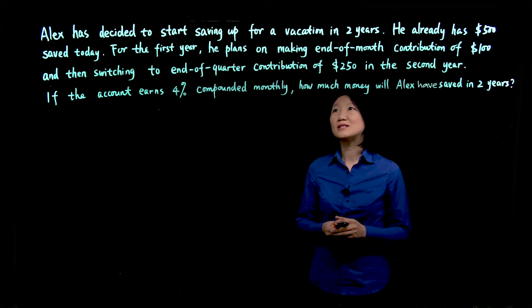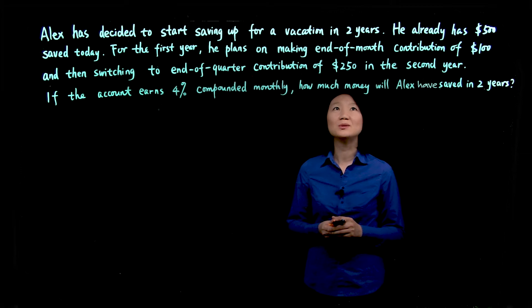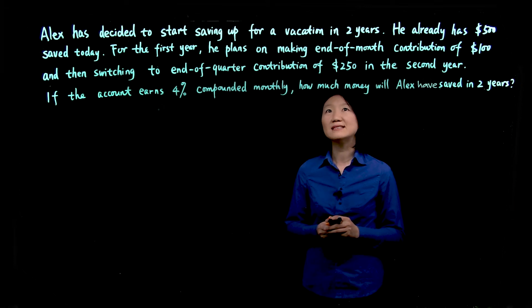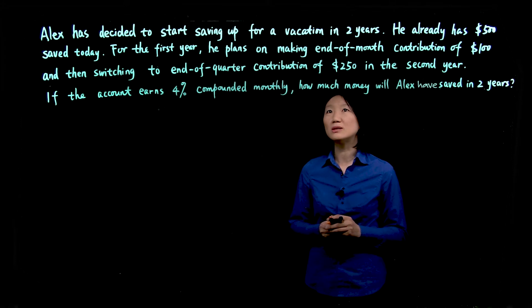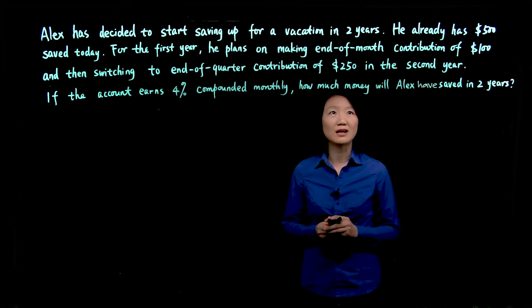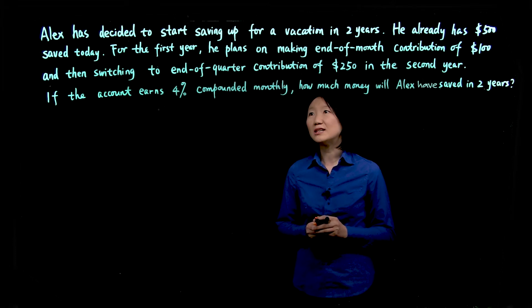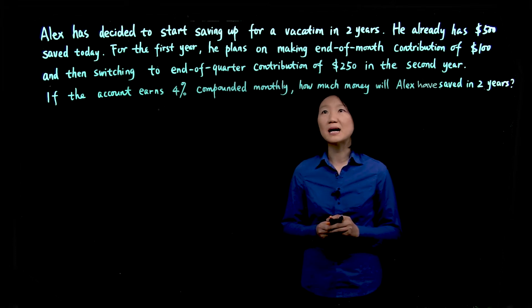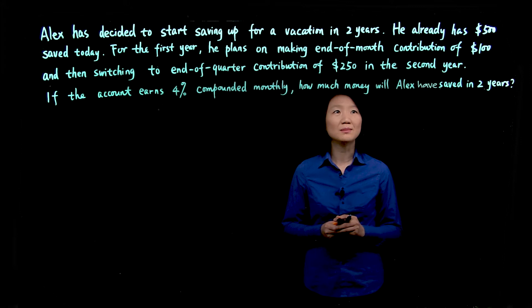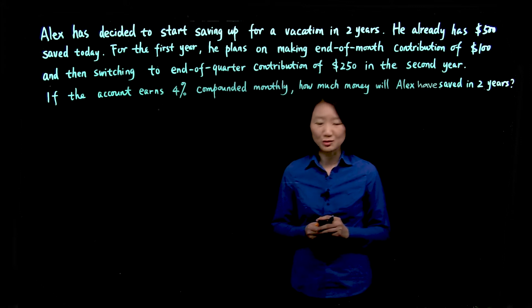Alex has decided to start saving up for vacation in two years. He already has $500 saved today. For the first year, he plans on making end of month contribution of $100 and then switching to end of quarter contribution of $250 in the second year. If the account earns 4% compounded monthly, how much money will Alex have saved in two years?